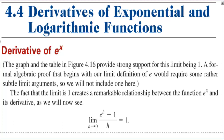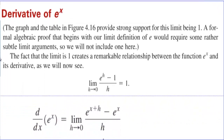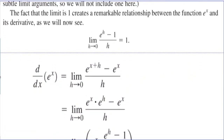Let's find the derivative of e to the x. The graph and table in figure 4.16 provide strong support for this limit being 1. A formal algebraic proof that begins with our limit definition of e would require some rather subtle limit arguments, so we will not include one here. The fact that the limit is 1 creates a remarkable relationship between the function e to the x and its derivative, as we will now see. That limit is equal to 1.